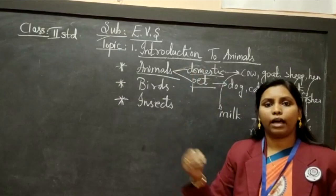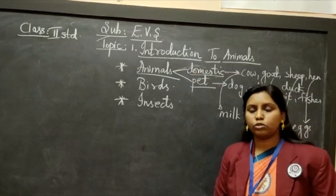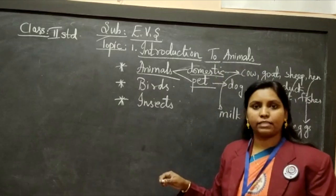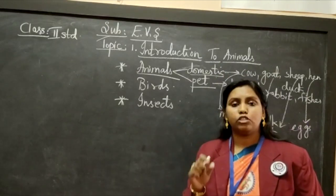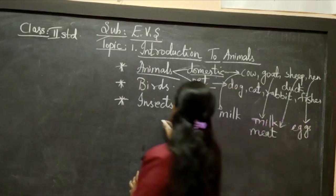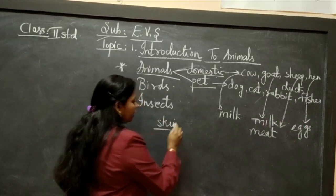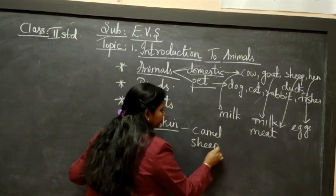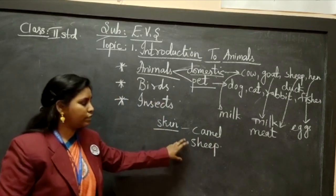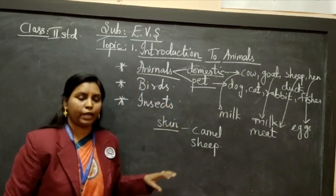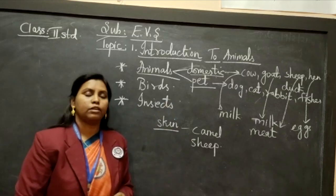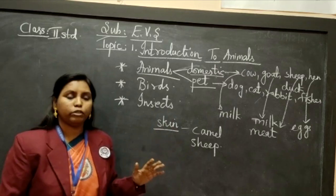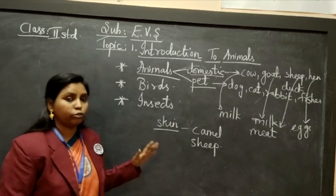What are the things given by animals to us? As we told you, cow and these animals give milk, meat, and eggs. The skin of animals is used as leather — like the skin of camel, skin of sheep, and skin of the snake. These leathers are used to make bags, jackets, belts, and shoes. All these things come from animals.